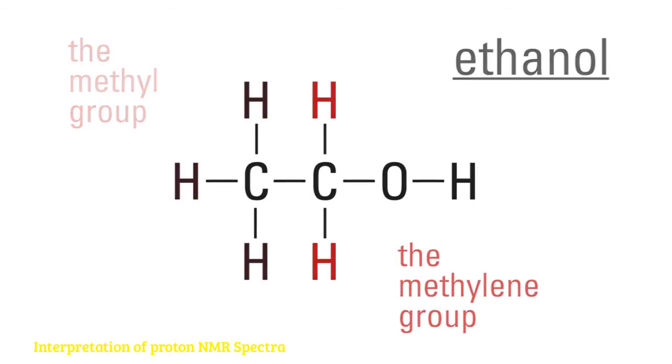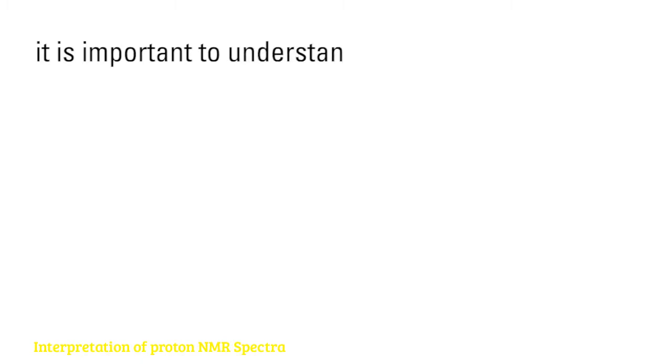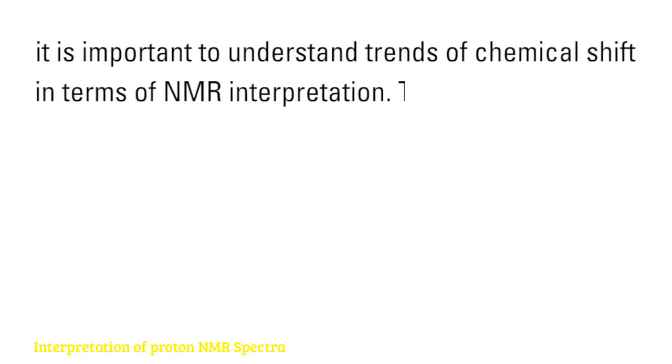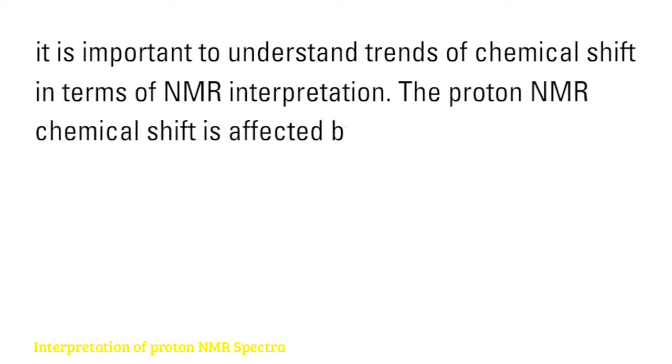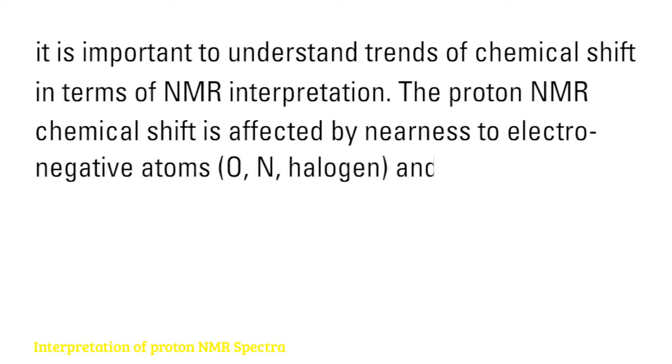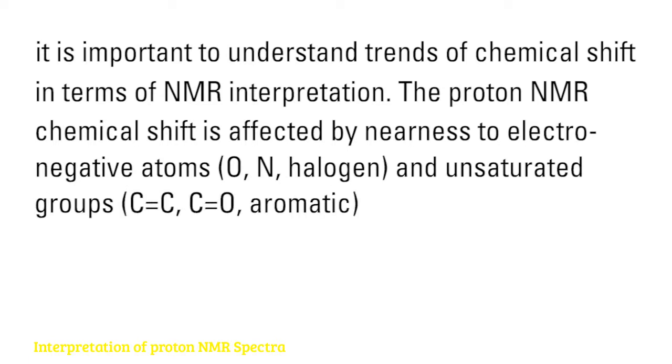It is important to understand trends of chemical shift in terms of NMR interpretation. The proton NMR chemical shift is affected by nearness to electronegative atoms: oxygen, nitrogen, halogen, and unsaturated groups, carbon double bonded to carbon and carbon double bonded to oxygen and aromatic.